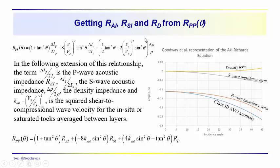Up to this point in time, we've talked quite a bit about the different formulations of amplitude variation with offset, or with incidence angle theta. We've talked about the Aki-Richards relationship, the Bortfield approximation, the Shuey approximation. These are all approximations of amplitude variation with offset that is defined in a more complicated set of equations by Zoeppritz.